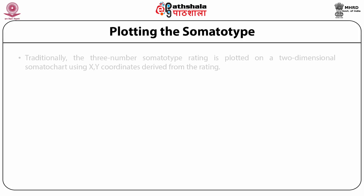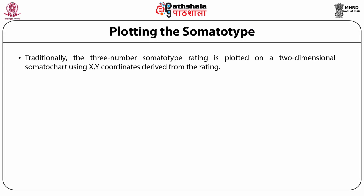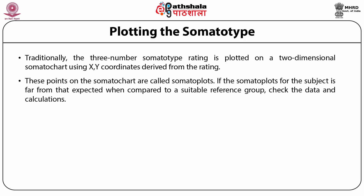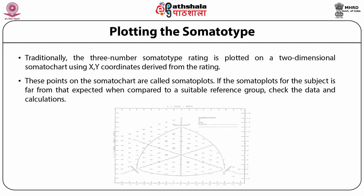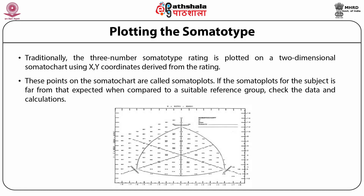Plotting the somatotype: traditionally the three-number somatotype rating is plotted on a two-dimensional somatochart using XY coordinates derived from the rating. The coordinates are calculated as: X = ectomorph minus endomorph; Y = 2 × mesomorph minus (endomorph + ectomorph). For subject 573, X = 1.5 and Y = 6.5. For subject B188, X = 2 and Y = 4. These points on the somatochart are called somatoplots. If somatoplots for a subject are far from that expected when compared to a suitable reference group, check the data and calculations.